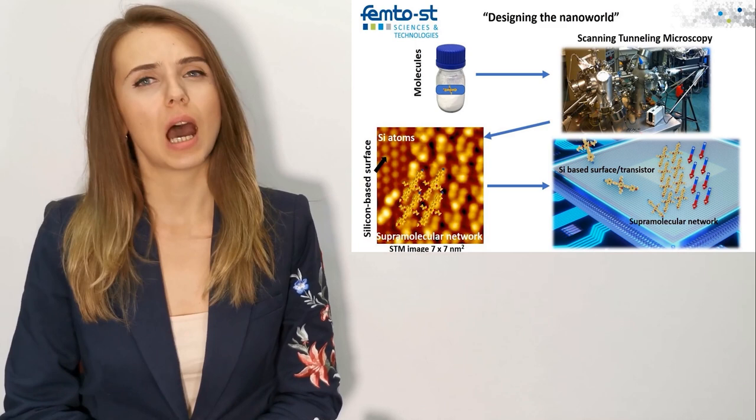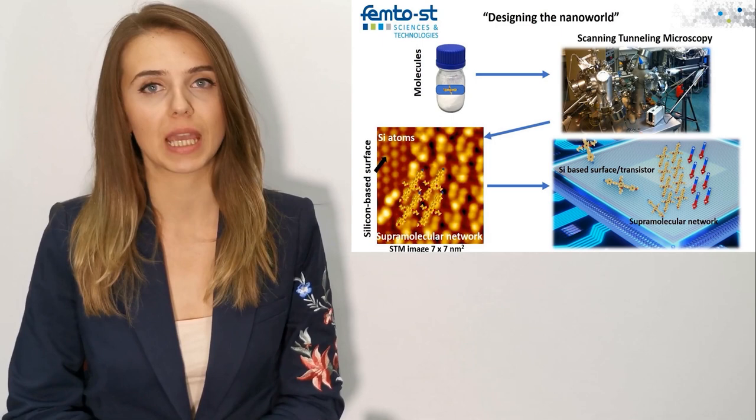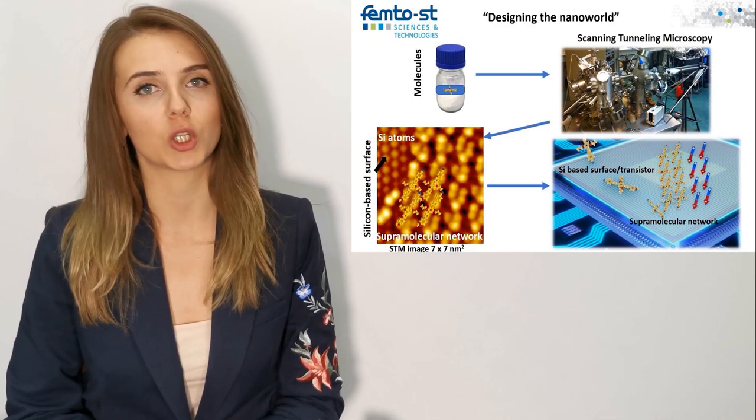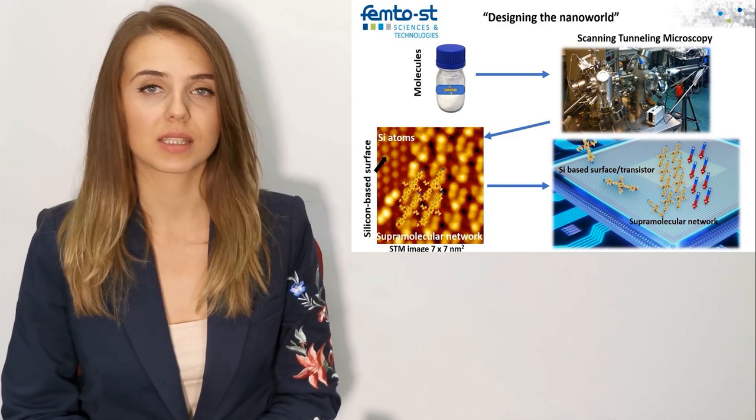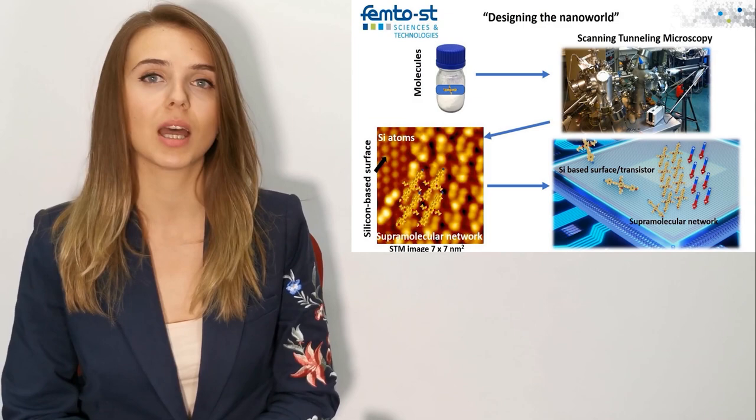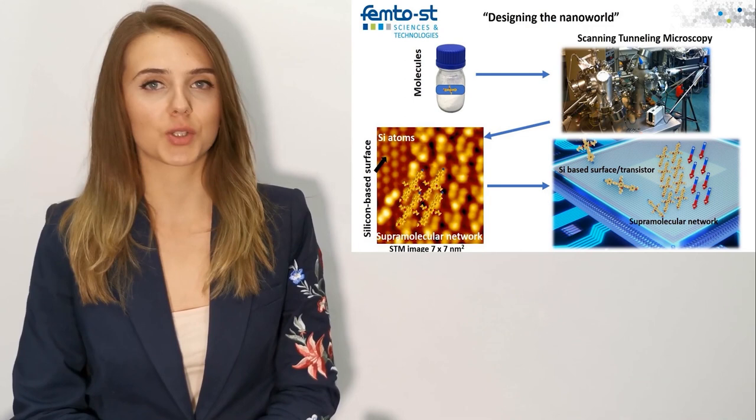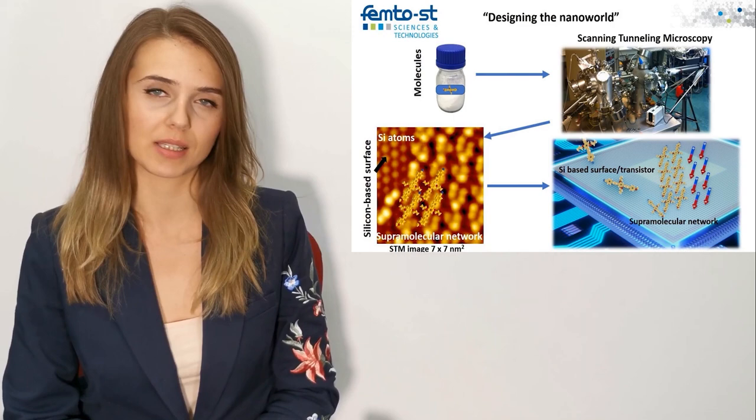But now one can ask the question: how are we able to see or confirm that we have formed nanostructures if the nanoworld is invisible by human eyes? Well, once the molecules are produced in the chemistry lab, their deposition on the surfaces, self-assembling and formation of nanostructures is monitored by one of the most advanced microscopies — scanning tunneling microscopy — which has atomic scale size precision.